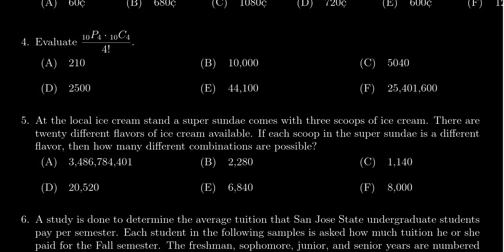In this video, we provide the solution to question number 4 for practice exam number 4 for Math 1030, in which case we have to evaluate the product of 10 permutation 4 times 10 combination 4 divided by 4 factorial.